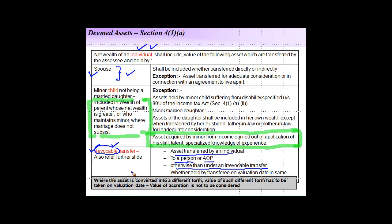An important provision that applies to all these transfers — spouse, minor child, or revocable transfer — is that if you transfer an asset and the recipient converts it into a different form, the value of that different form has to be taken on the valuation date. The value at the time of the original transfer is not to be considered.